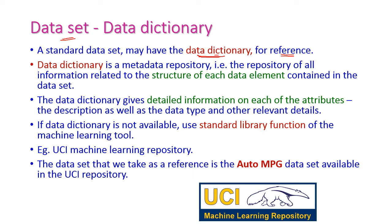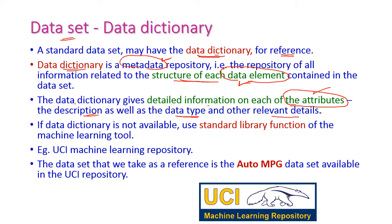Every dataset should have its own data dictionary, which is used for reference purposes. The data dictionary contains a metadata repository — metadata means information about the data. It is the repository of all information related to the structure of each data element in that dataset. The data dictionary gives detailed information on each attribute, including its description, data type, and other relevant information.